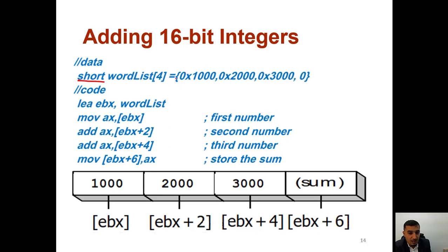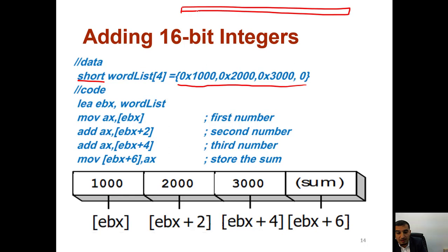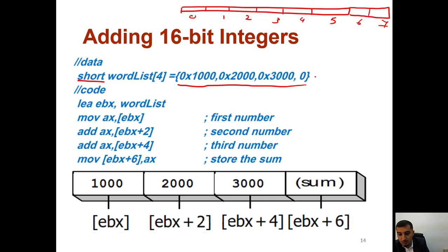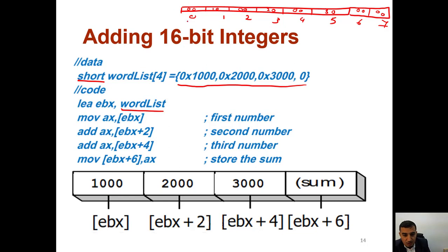Now the difference if it was 16-bit: first of all we define the variable as 'short' instead of __int8. The data will be stored differently. If I want to check the memory, I will have locations zero through seven, because each 16-bit value occupies two memory locations. So we have 00 01 00 00 00 02 00 00 00 03 00 00 — the values spread across pairs of bytes.